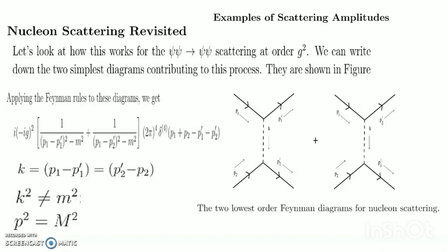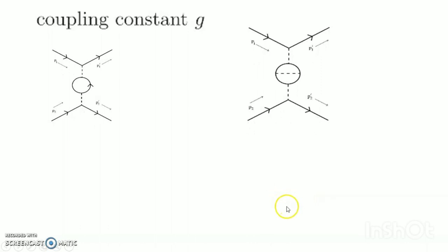For example, we have two additional diagrams contributing at higher orders. Using the Feynman rules, each of these diagrams translates into an integral that we will not attempt to calculate here. We go on with increasingly complicated diagrams all appearing at higher orders of the coupling constant g. Diagram A contributes at order g⁴ and another contributes at order g⁶.